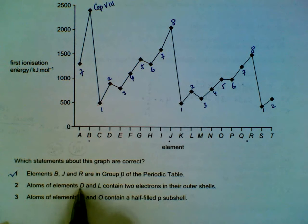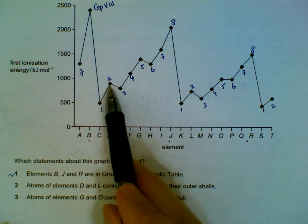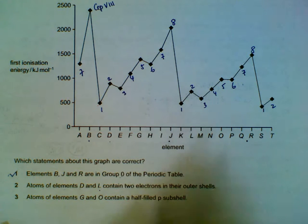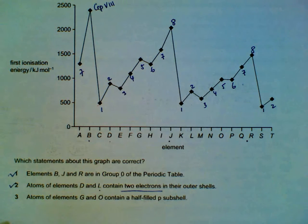Statement 2: atoms of elements D and L contain two electrons in their outer shell. D is from Group 2, L is also from Group 2, so if they are Group 2, they will contain two outer electrons. This is correct.